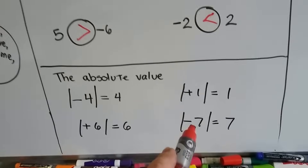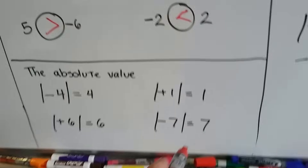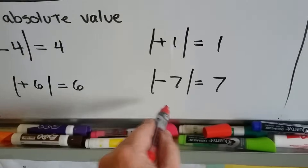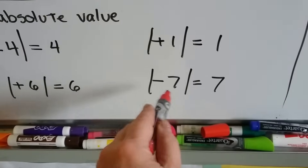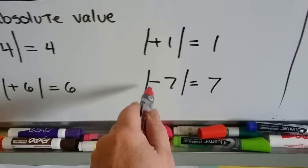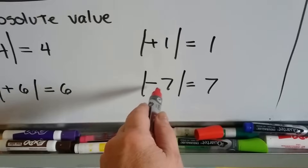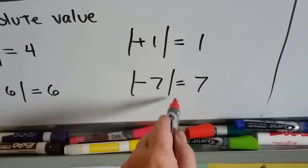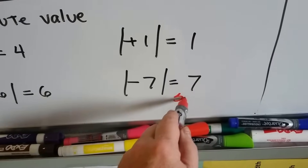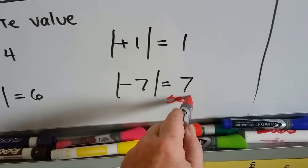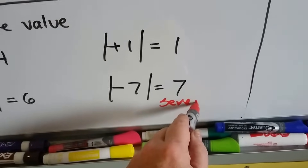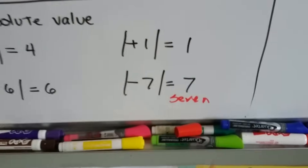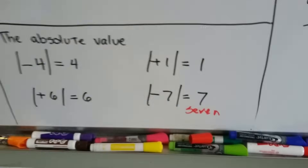You can almost think of it as putting it in a word phrase. How far is negative seven from zero? It's seven. Writing it as words: it's seven spaces from zero.